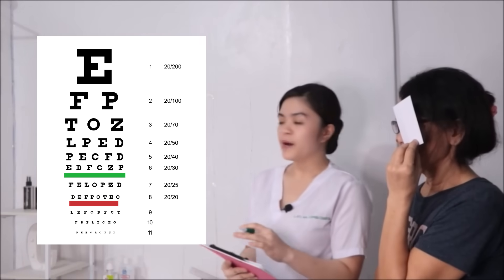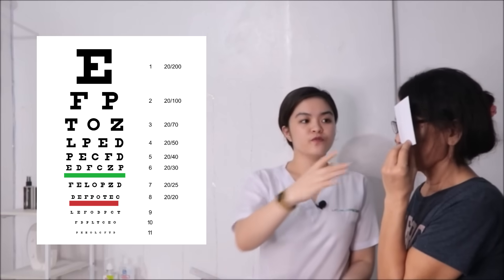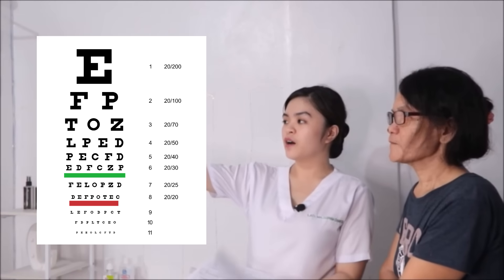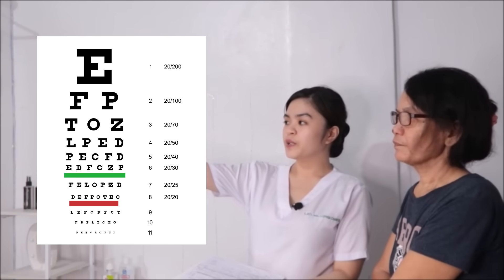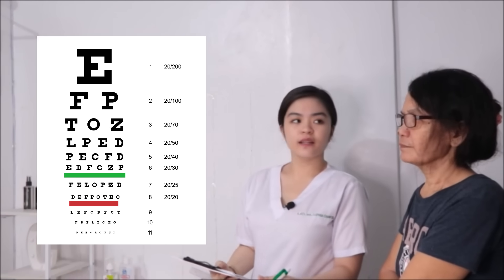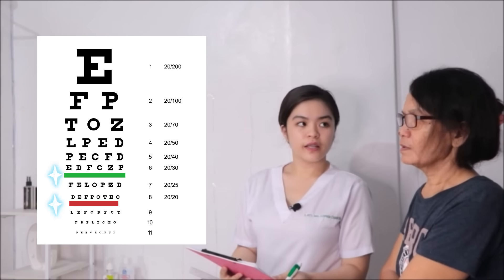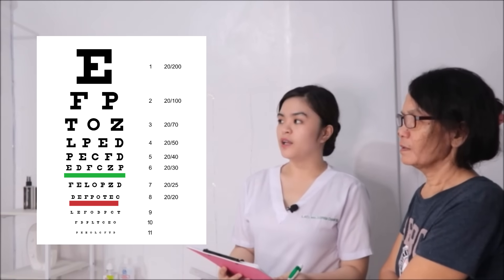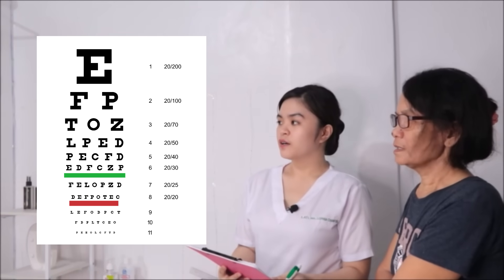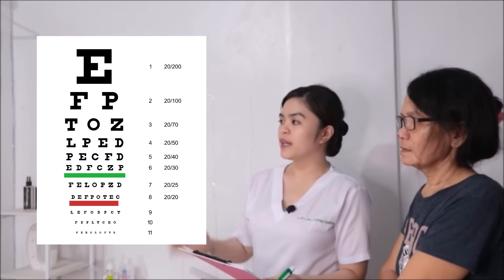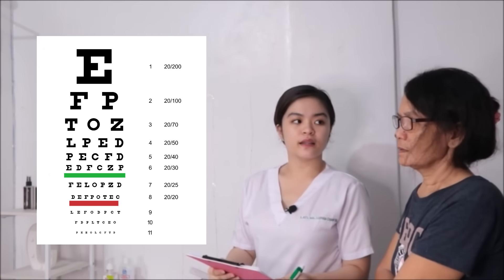Okay, ma'am, can you please remove it? Can you identify the color between line 6 and line 7? Green. Okay. How about between line 8 and line 9? Red. Okay.